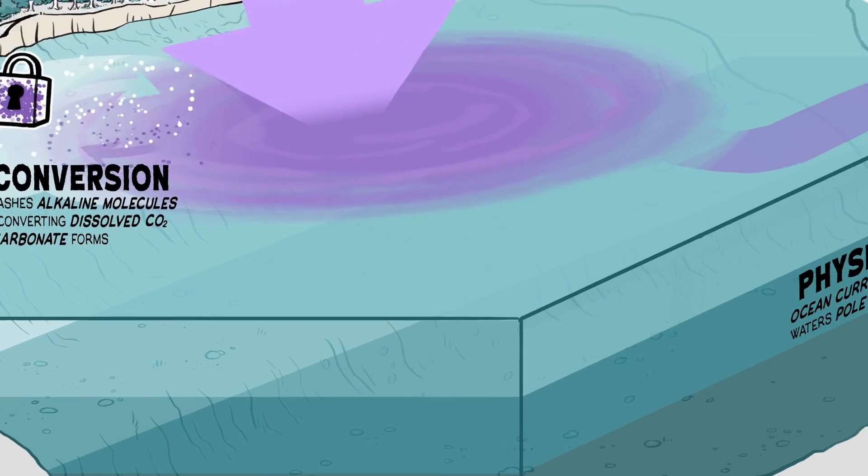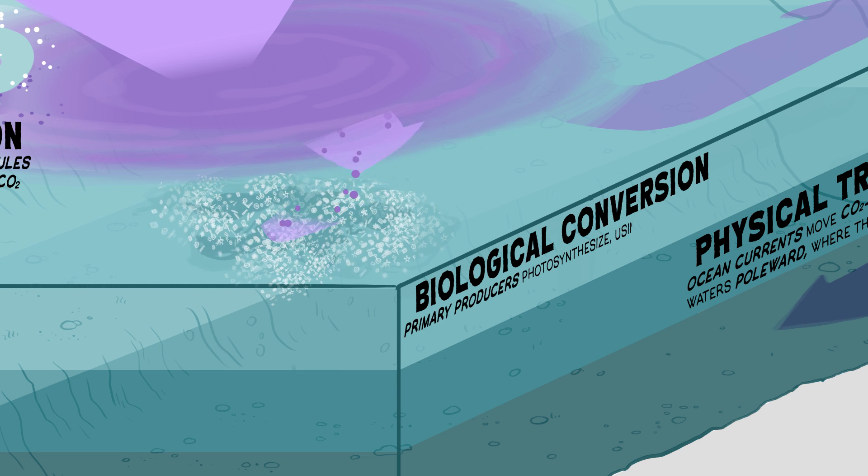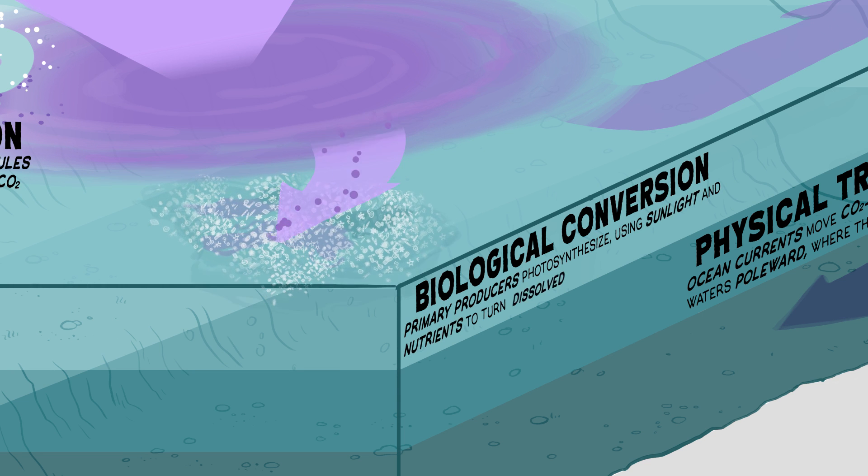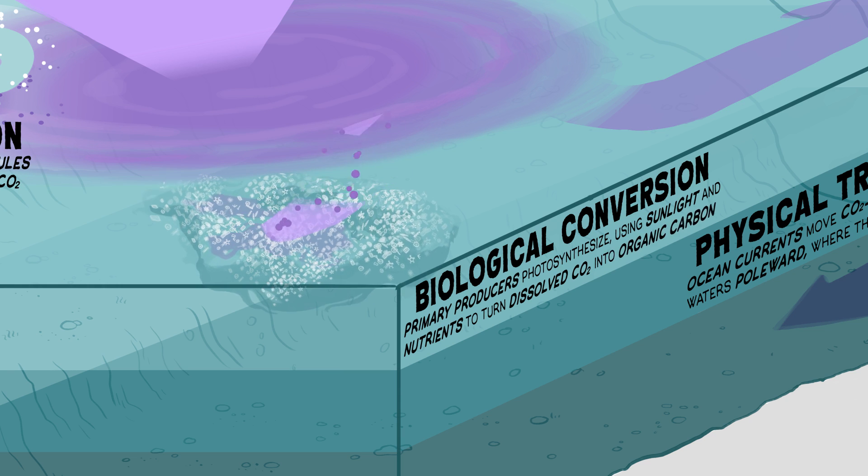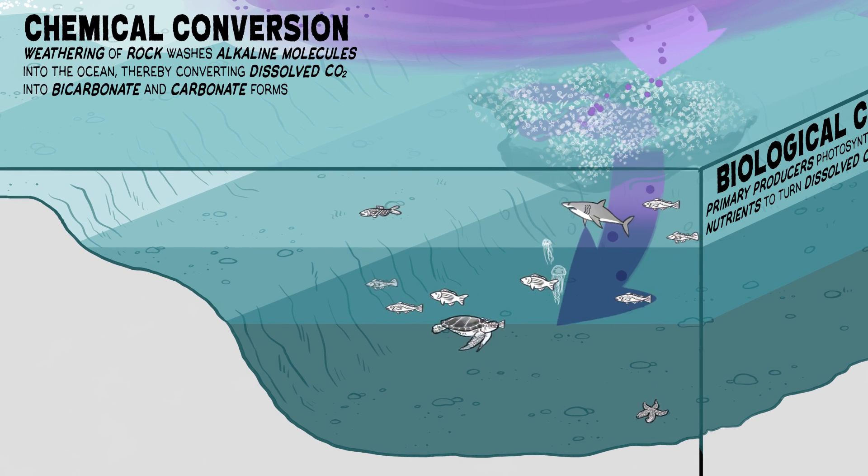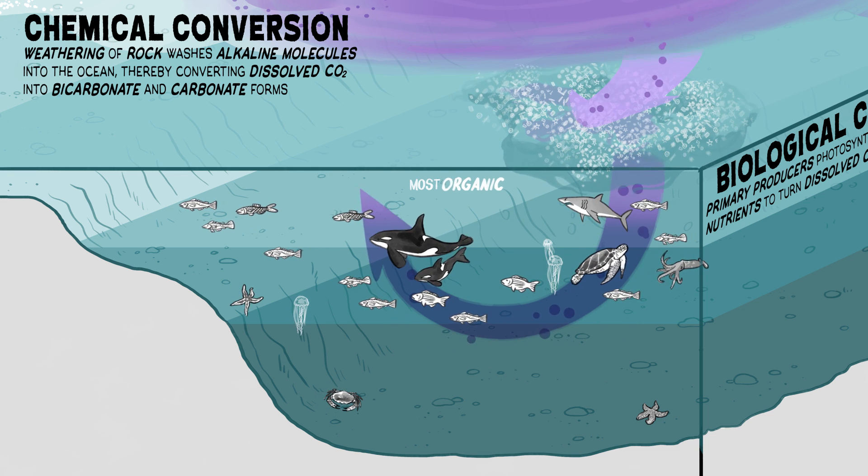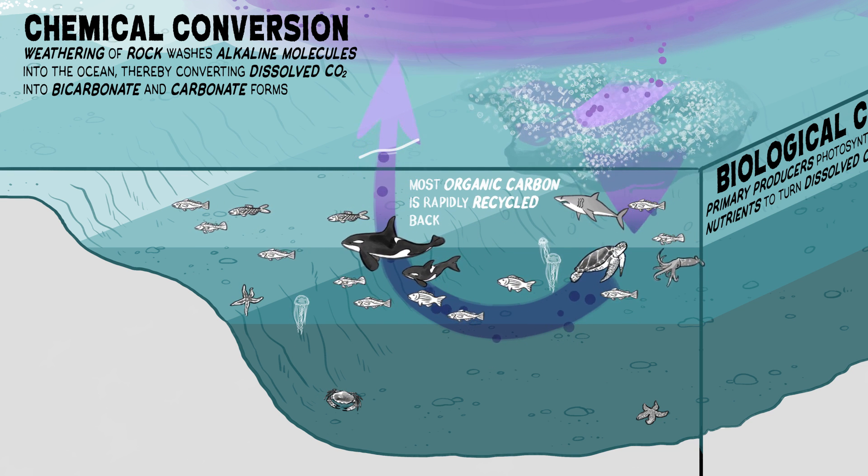On much shorter timescales, primary producers photosynthesize, using sunlight and nutrients to turn dissolved CO2 into organic carbon that fuels the food web. As organisms feed on one another, and trillions of microbes digest even the smallest of particles, most organic carbon is rapidly recycled back into CO2.